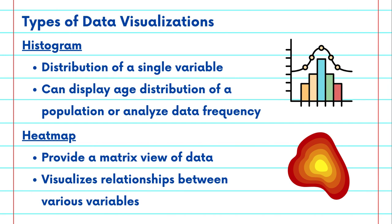Heat maps provide a matrix view of data and are excellent for visualizing relationships between variables. Use them to display correlation matrices, analyze complex data sets, or even show employee performance.